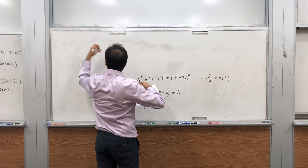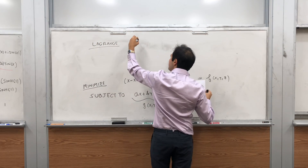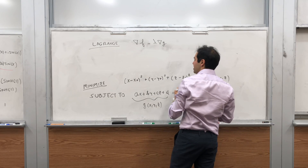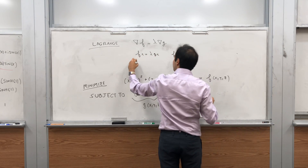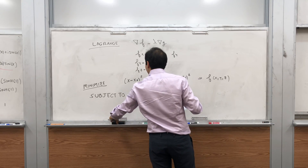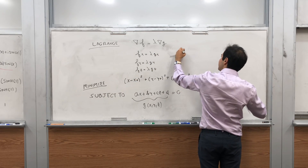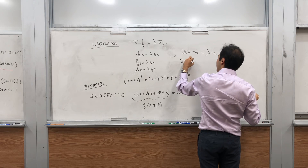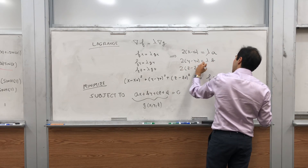So what does Lagrange say? It just says that at the minimum, the gradients are parallel. So the gradient of f is a scalar multiple of the gradient of g. That means: fx = λ·gx, fy = λ·gy, and fz = λ·gz. Let's calculate all that. So fx = 2(x - x0) = λa, fy = 2(y - y0) = λb, and fz = 2(z - z0) = λc.